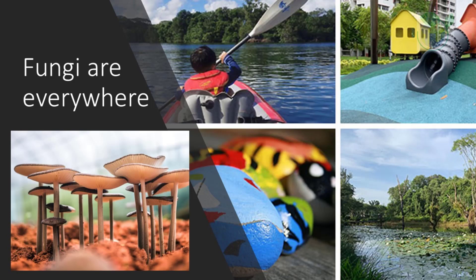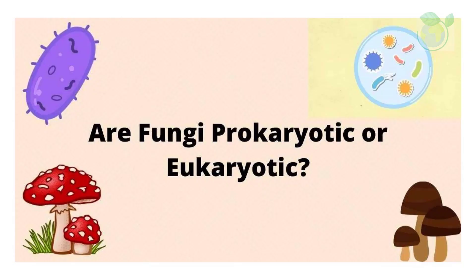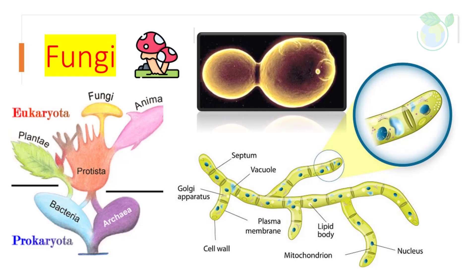Fungi are everywhere. They are sometimes big, such as mushrooms, but sometimes they are also too small to see with the naked eye. Fungi reside as saprophytes in the soil and on decaying plant material. Are fungi prokaryotic or eukaryotic? The answer is fungi are eukaryotic, with a range of internal membrane systems, membrane-bound organelles, and a well-defined cell wall which is composed largely of polysaccharides.